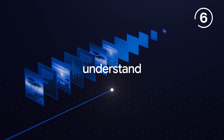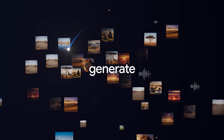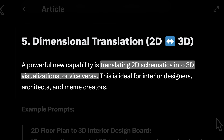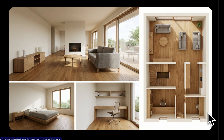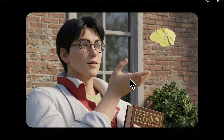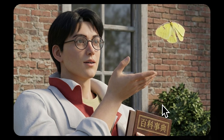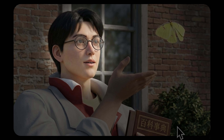NanoBananas uses a thinking process to understand the semantics and details of what you're generating. This lets you convert 3D to 2D and vice versa. You can generate a 2D floor plan from a 3D image, or convert 2D into 3D. The final edit looked a bit unnatural, but given how well it replicated the butterfly and the book, it just needs to work on the face.